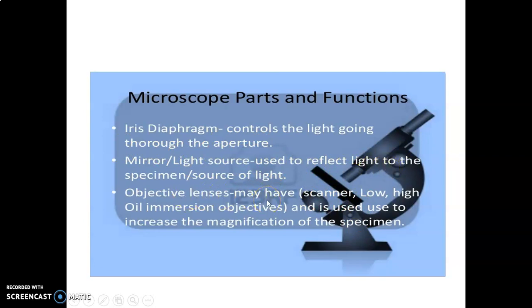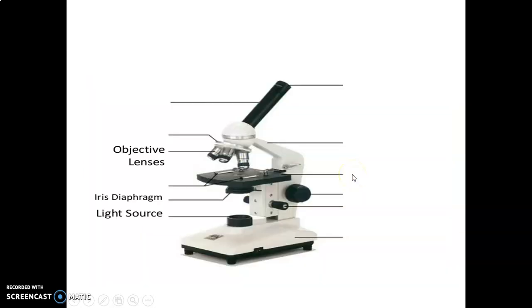Then we have a mirror or a light source which will reflect light to the specimen. Objective lenses are used to increase the magnification of the specimen. This is your iris, your diaphragm, and then your light source.